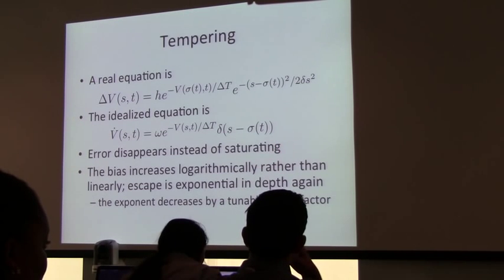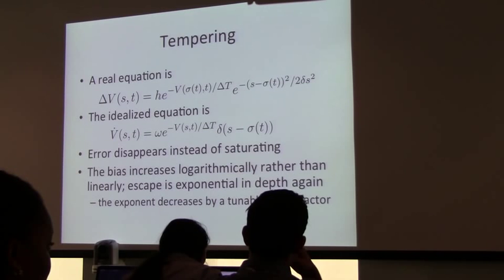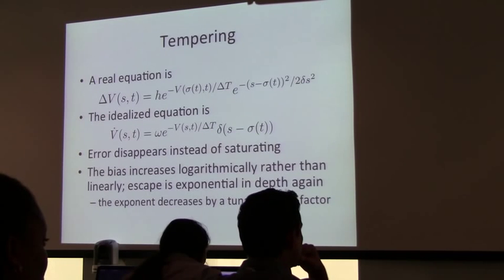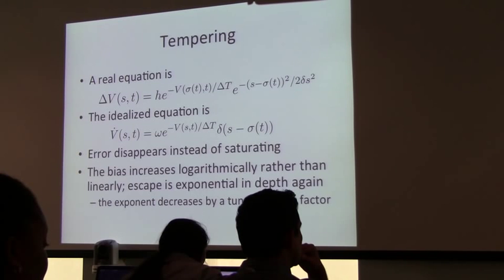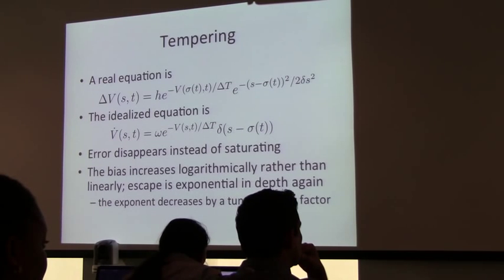To summarize the basics: you are trying to avoid places you've already been. You save where you've been using an address that is only a few collective variables, instead of everything else that's going on. And you're decreasing the rate at which you do it, so that you can get arbitrary accuracy instead of having a saturating error.